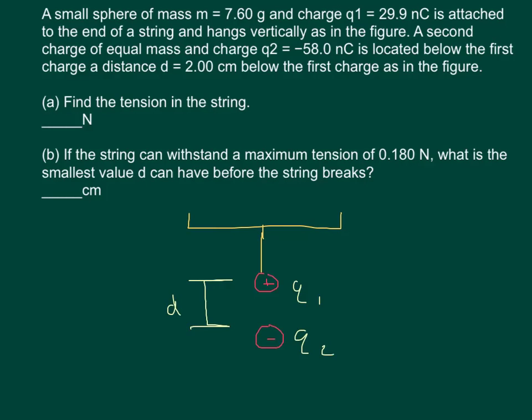A second charge of equal mass Q2 is negative 58 nanocoulombs is located below the first charge a distance of 2 centimeters.